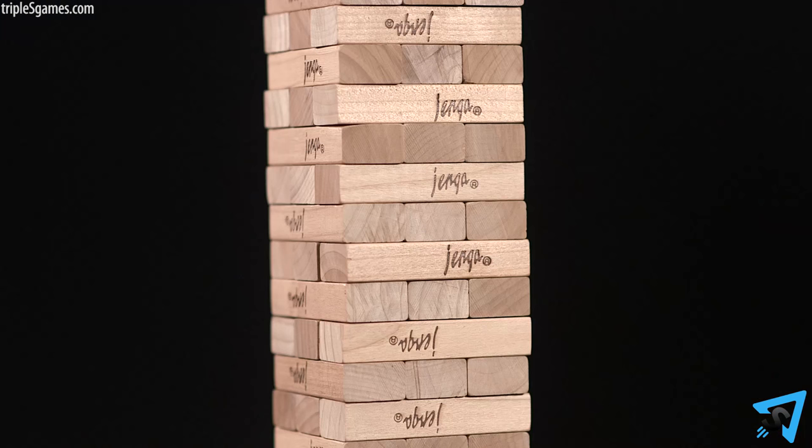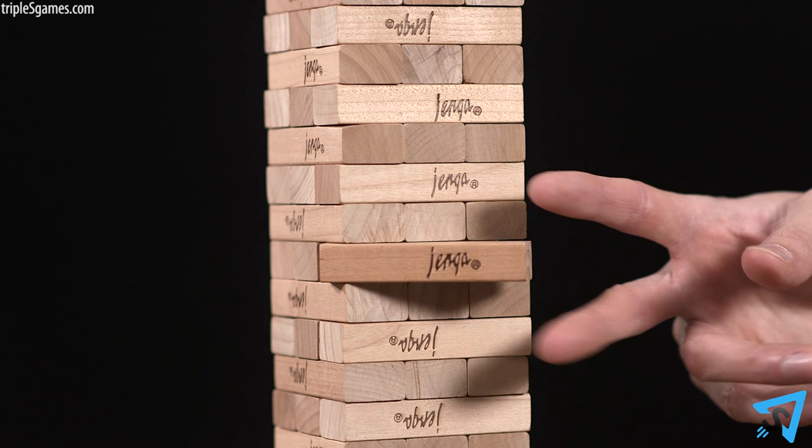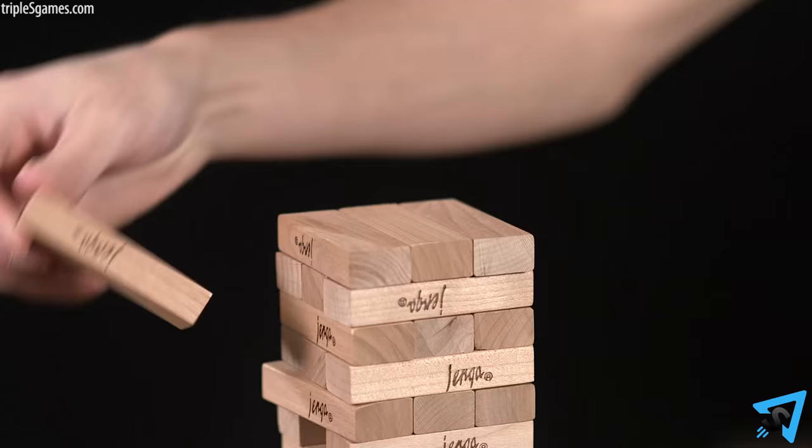On your turn, you must remove one block from the tower and place it on top of the tower, continuing the 90 degree alteration with every layer without it falling.